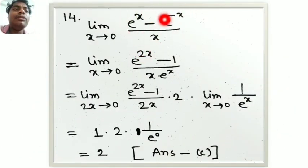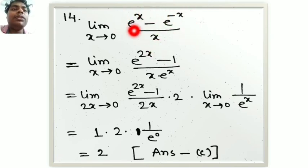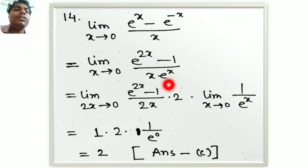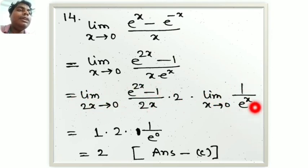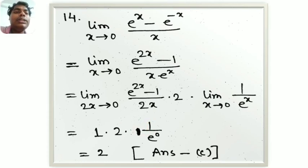Next: limit x tends to 0 of (e to the power x minus e to the power minus x) by x. We multiply out the numerator terms. The upper part tends to 0 and we get 2. So limit equals 1 by 2 times 2, which equals 2. The answer is 2.